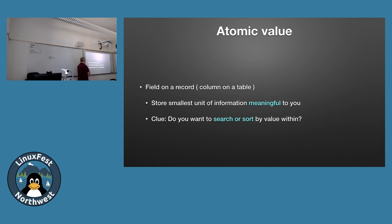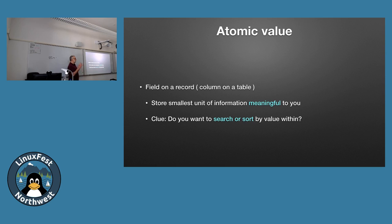First thing about organizing your databases: when you're setting up a table and going to add a column, you have to figure out atomic values. A field on a record or a column on the table means the same thing. You need to look at the smallest unit of information that's meaningful to you, and that's the whole catch — it's whatever the business context is going to determine what kind of meaning. The tip is: when are you going to search or sort by a value within another value? If so, that's not atomic — you need to break those out.